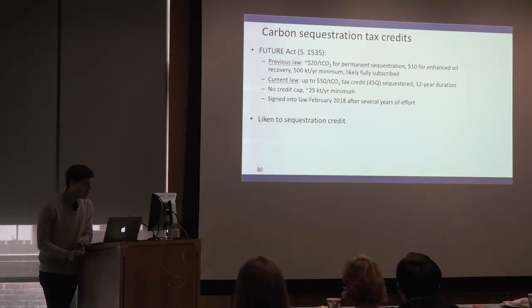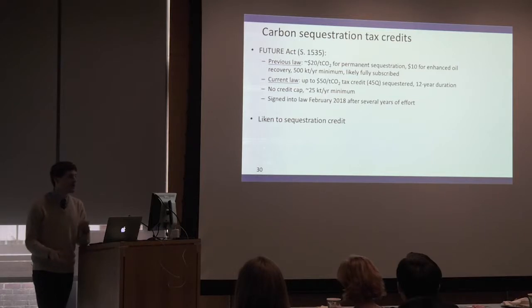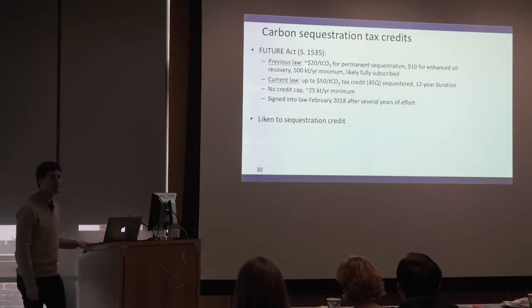When we passed an FY 2018 budget in February of 2018, these tax credits were included. There is now a 12-year tax credit that folks have about eight years to qualify for, paying up to $50 a ton to capture and compress any qualifying source of CO2 in the United States. This is a pretty big deal, especially given the economics I've talked about for putting CCS on ethanol right now.